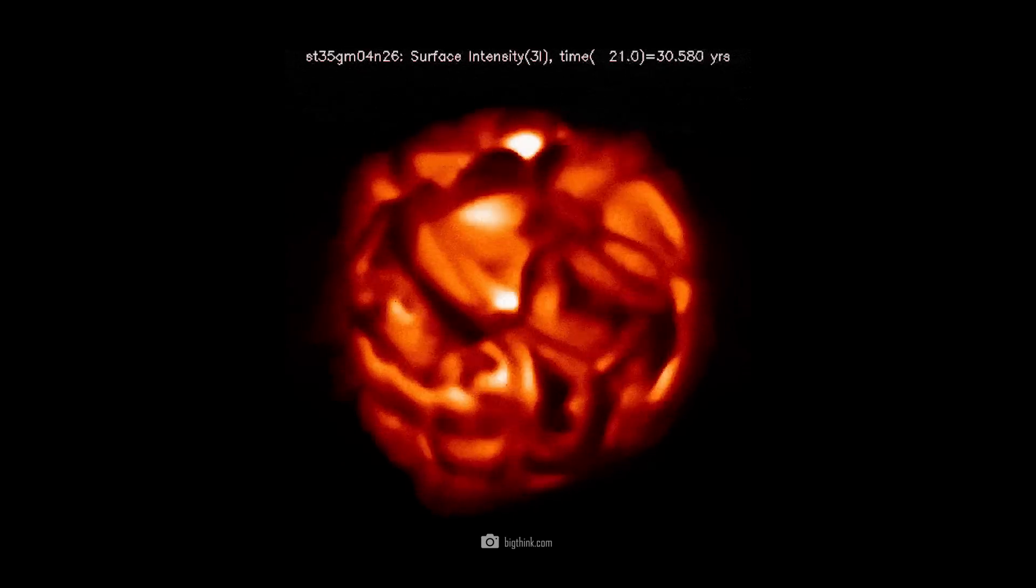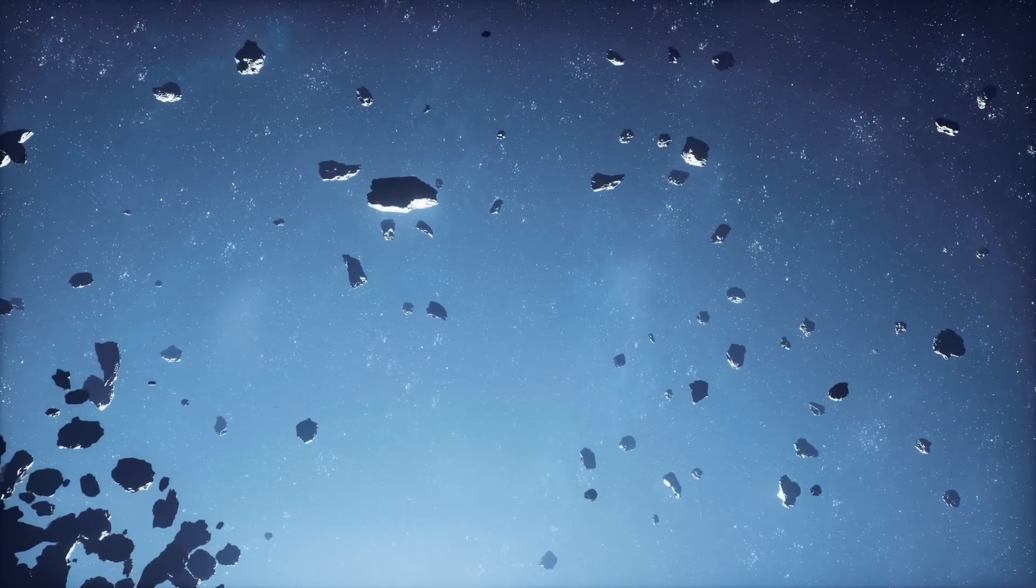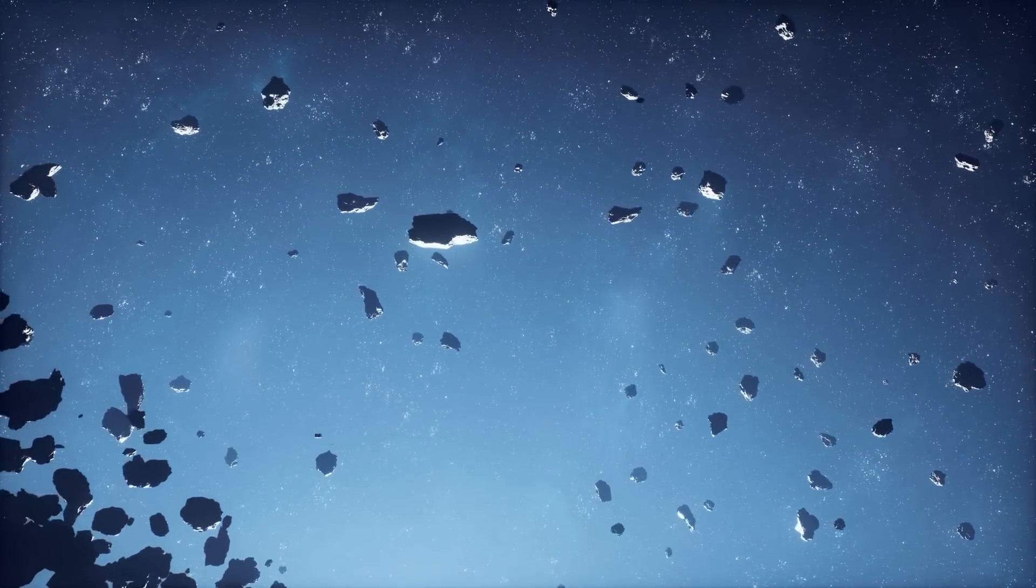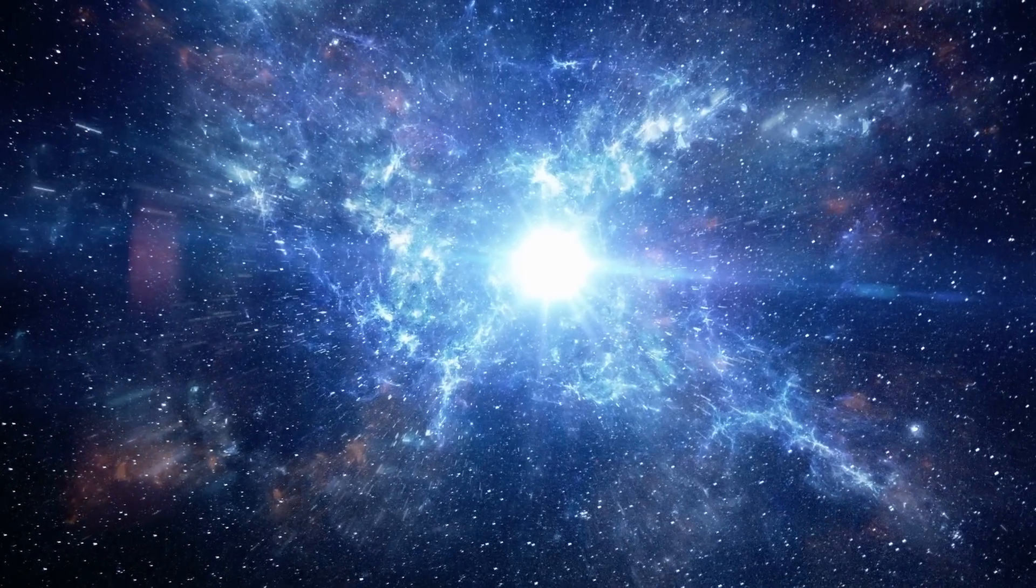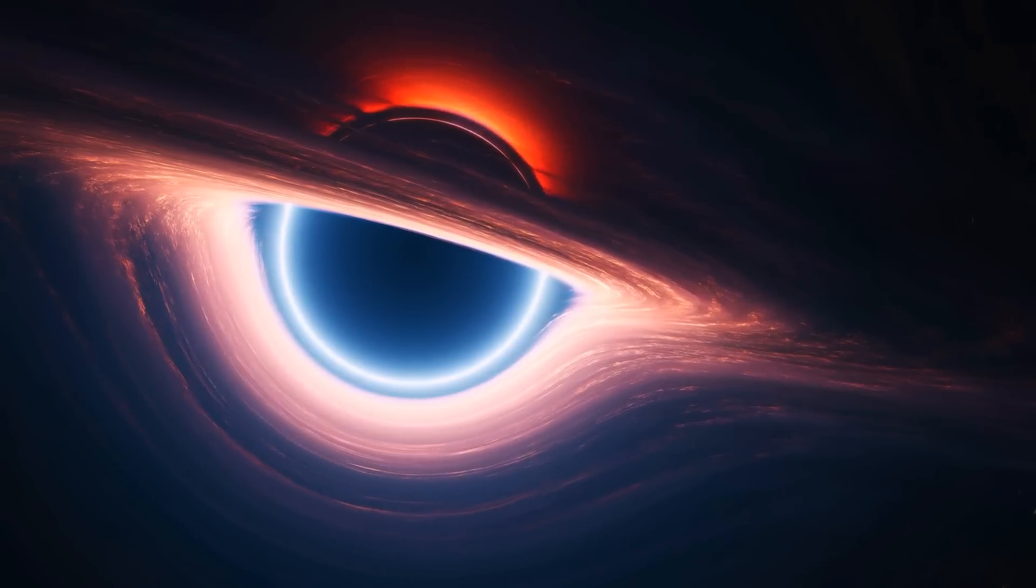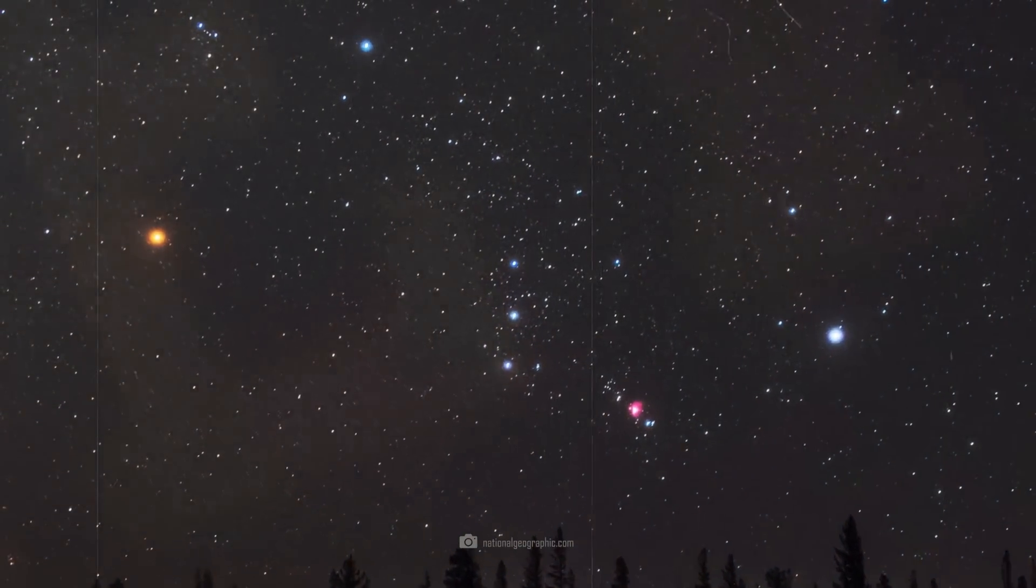So when Betelgeuse begins its final act, it will not completely perish. Large parts of its mass will be recycled. At the place where Betelgeuse once stood, a neutron star or a black hole will remain after its end. Despite these legacies, Betelgeuse will no longer be visible to us.